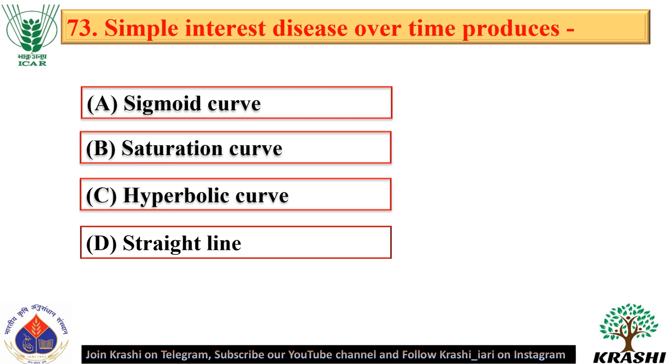Question number 73. Simple interest disease over time produces a hyperbolic curve.